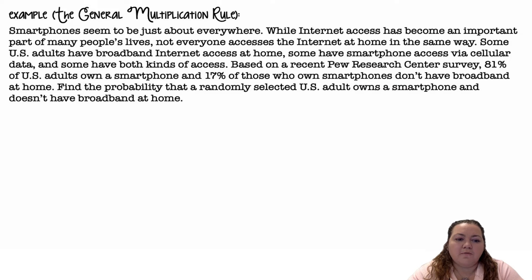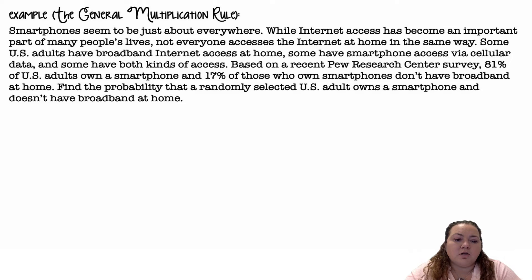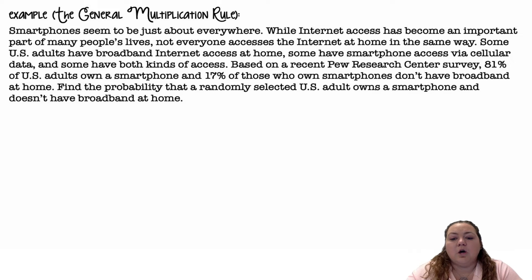The general multiplication rule. Smartphones seem to be just about everywhere. While internet access has become an important part of many people's lives, not everyone accesses the internet at home in the same way. Some U.S. adults have broadband internet access at home, some have smartphone access via cellular data, and some have both kinds of access. Based on a recent Pew Research Center survey, 81% of U.S. adults own a smartphone, and 17% of those who own smartphones don't have broadband internet at home. Find the probability that a randomly selected U.S. adult owns a smartphone and doesn't have broadband at home.